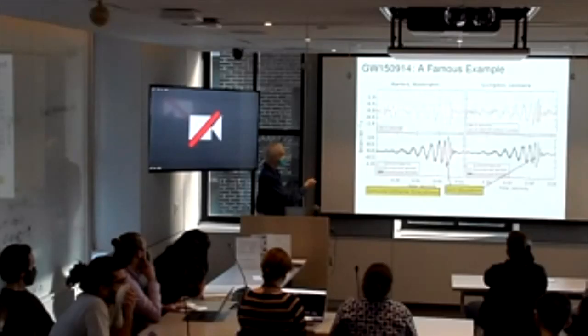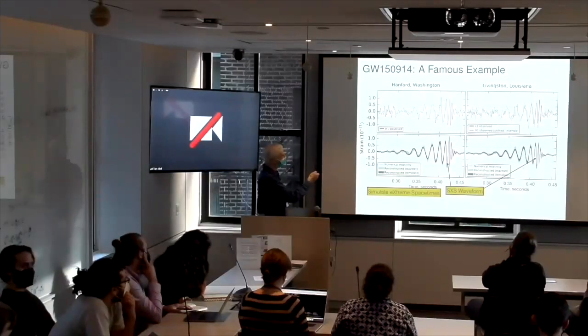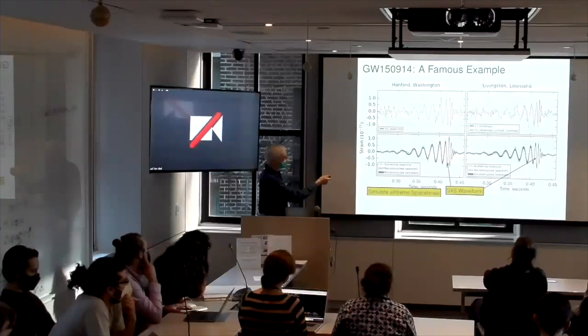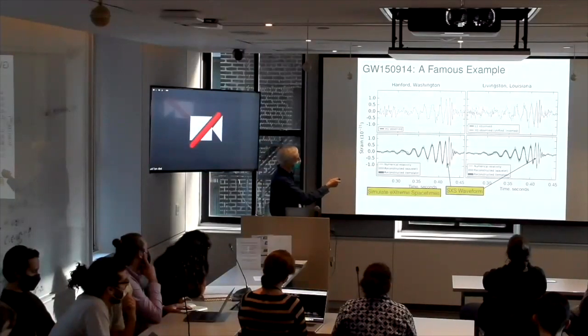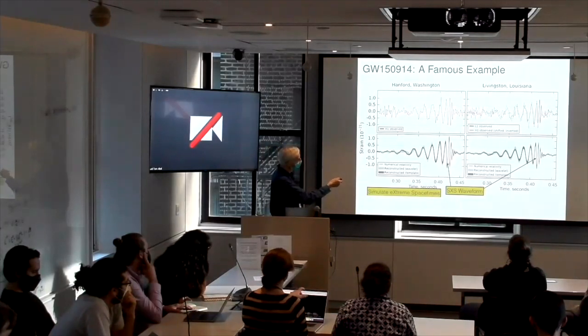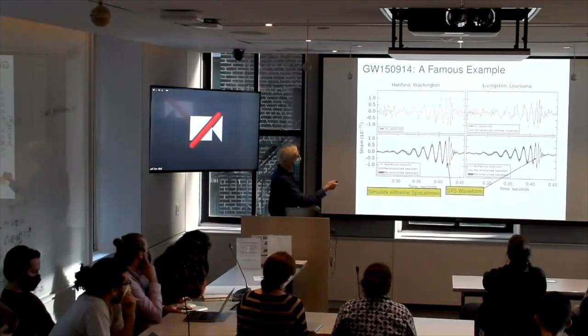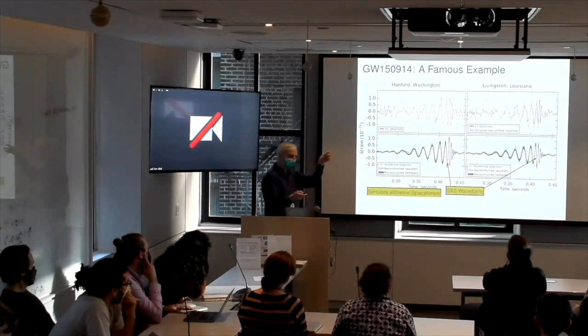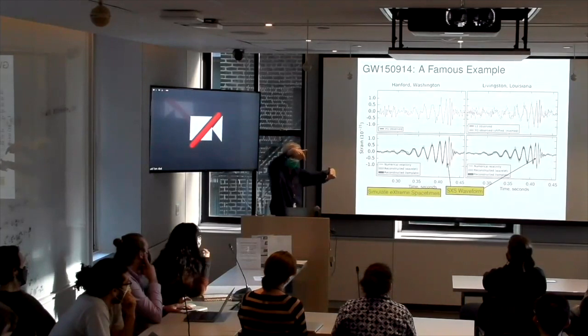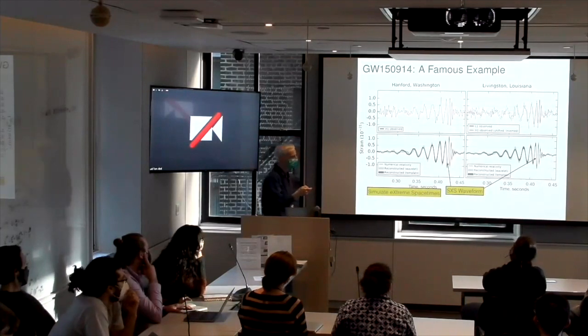You see this is the waveform, the strain, delta L over L, the fractional change in the arm length as a function of time. This is at Hanford in Washington, and this is in Louisiana. Here, what they've done is they've taken this waveform and superposed it on top of this one. I know for technical reasons it's inverted, but that's just because of the geography of these two sites. They have to change the orientation of the detectors.